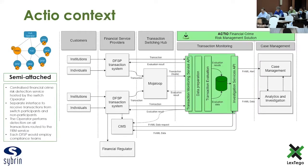Actio is a platform that attaches to either a DFSP transacting system or a MojaLoop switching network and can receive transactions from either of those two platforms, where it will do an evaluation using a rules-based evaluation engine. The results are then either fed back to the client platforms or sent onwards to a case management solution where you can then investigate particular alerts for the financial crime that was detected.